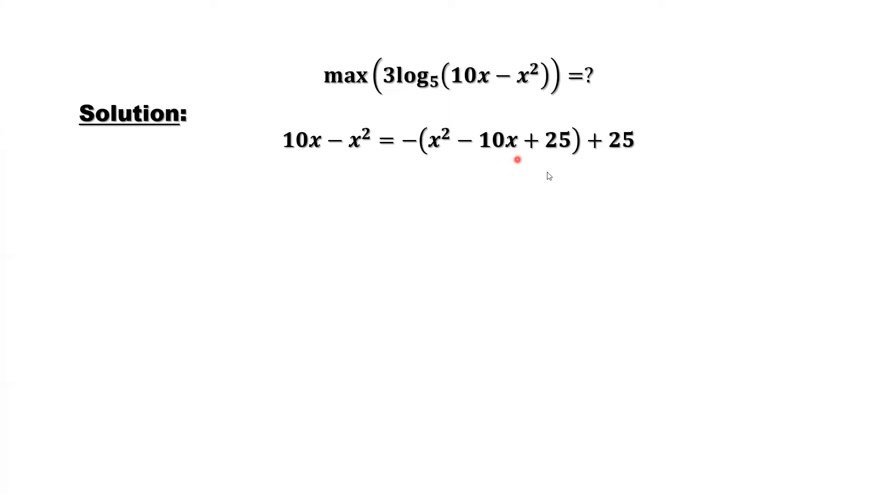Or you can use this method to complete the square. How to complete the square? Take the negative sign out: x squared minus 10x. In order to complete the square, 10 is 2 times 5, so we need 5 squared here. That's 25.